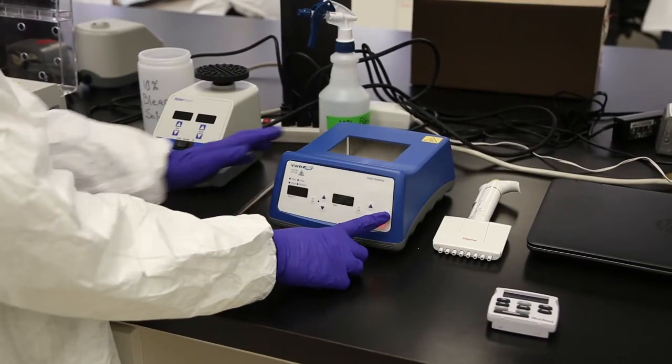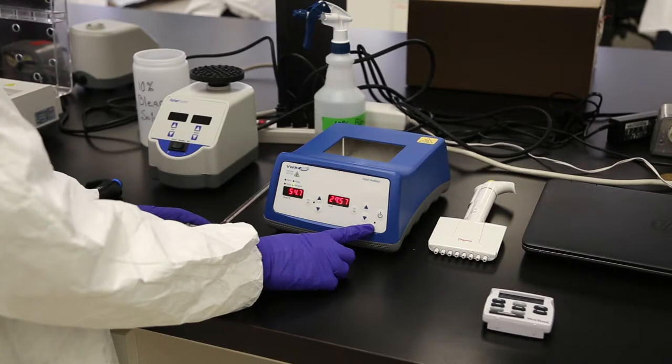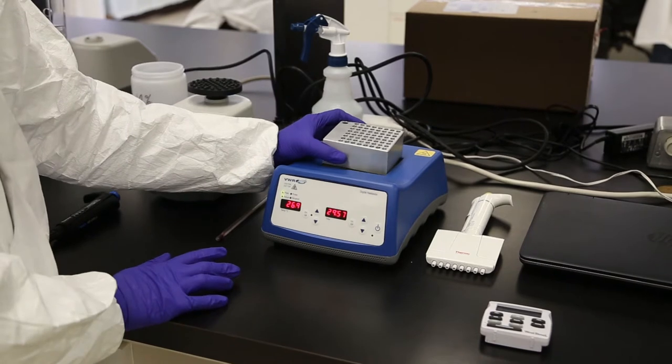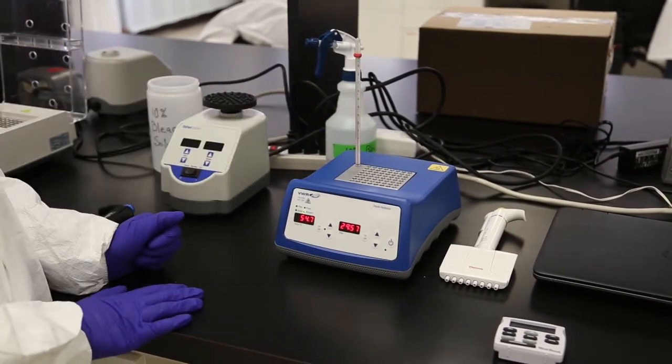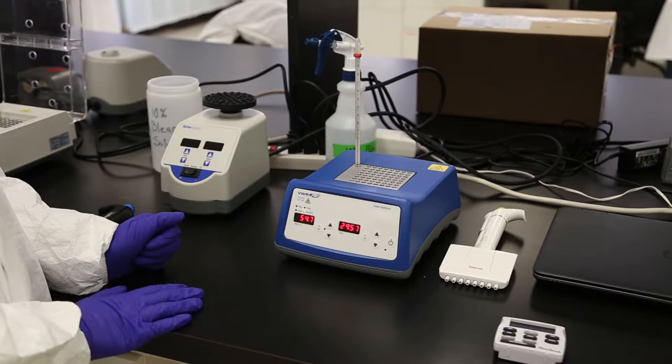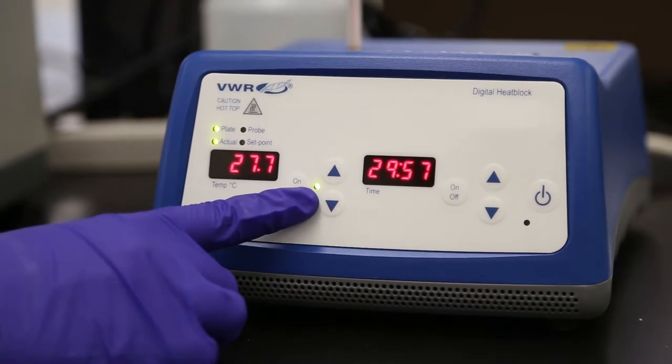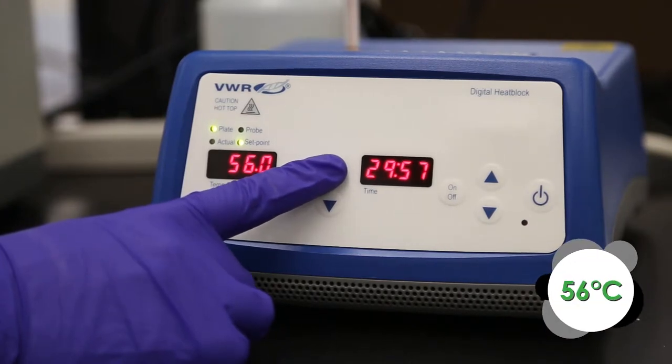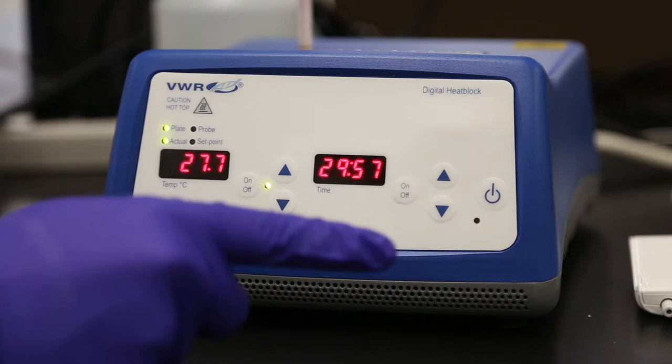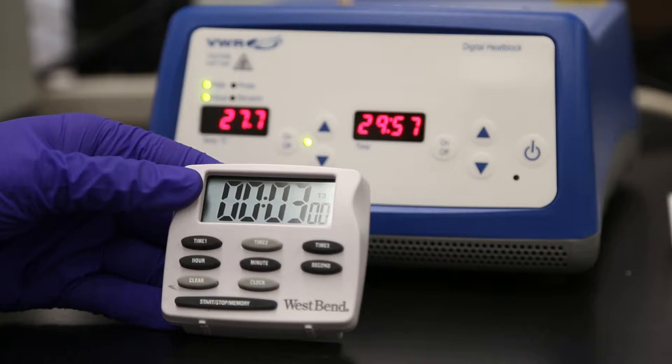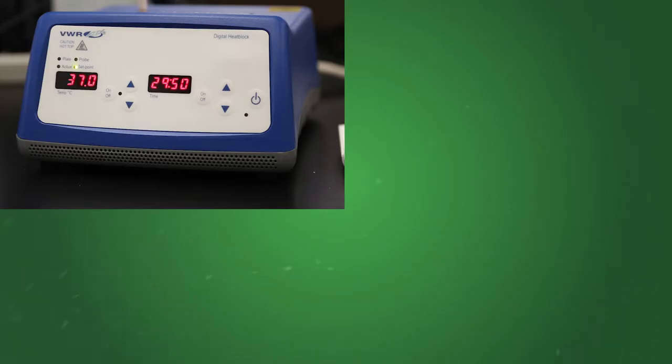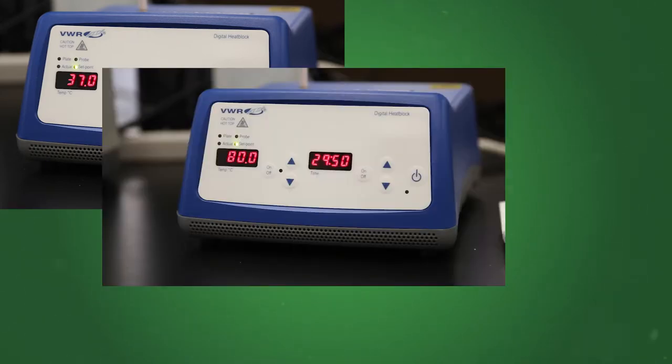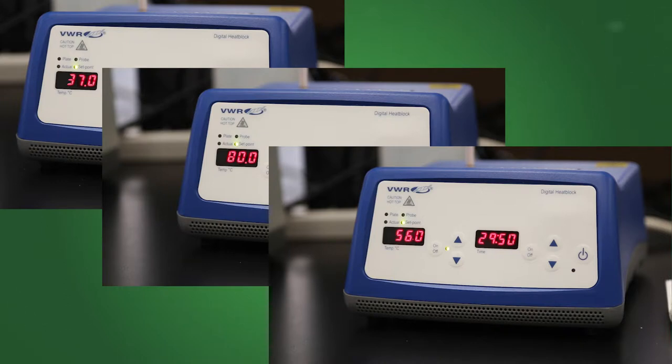To power on the single dry bath heater, press the power button on the front. When powered on, a red light turns off and LEDs display the temperature and time. Place the 64-hole block in the unit. Start the heater by pressing the on-off button. A green light comes on to indicate the unit is heating. To set the temperature, use the up and down arrows to adjust the display to 56 degrees Celsius. Do not use the VWR's timer. Instead, use a timer similar to this one, set to 3 minutes. Remember, the green light must be on for the block to heat.